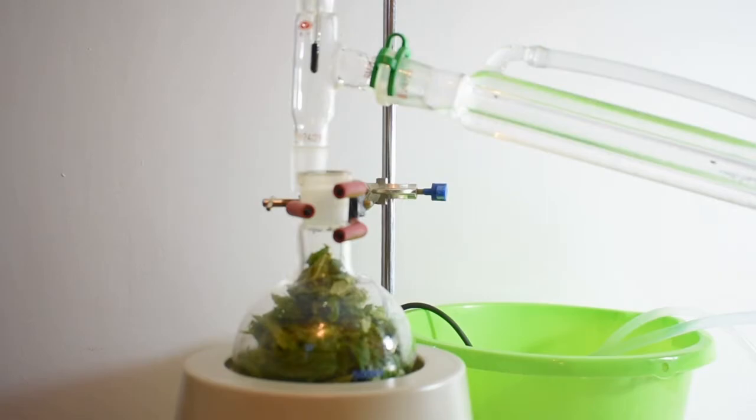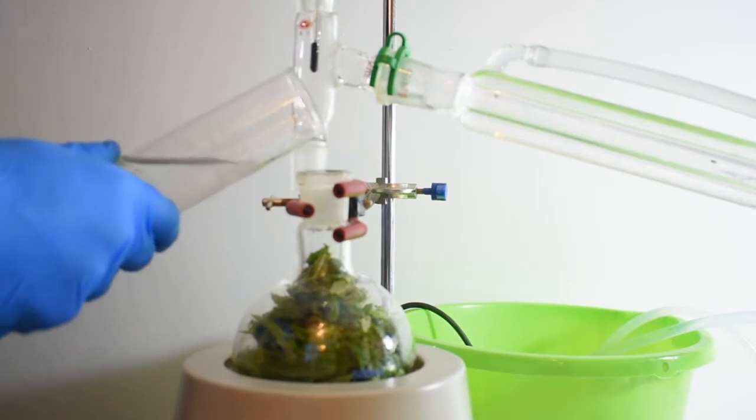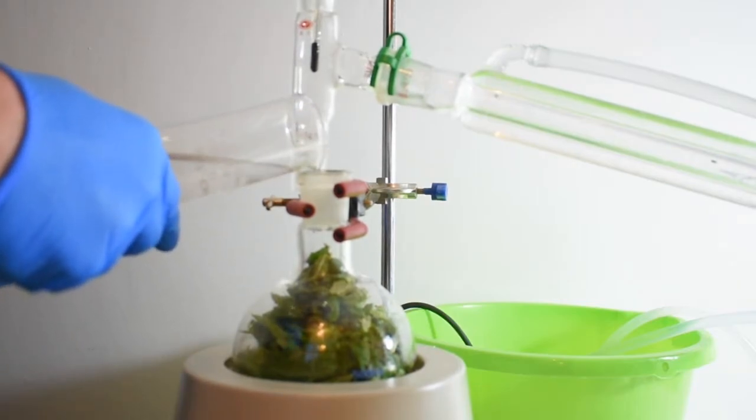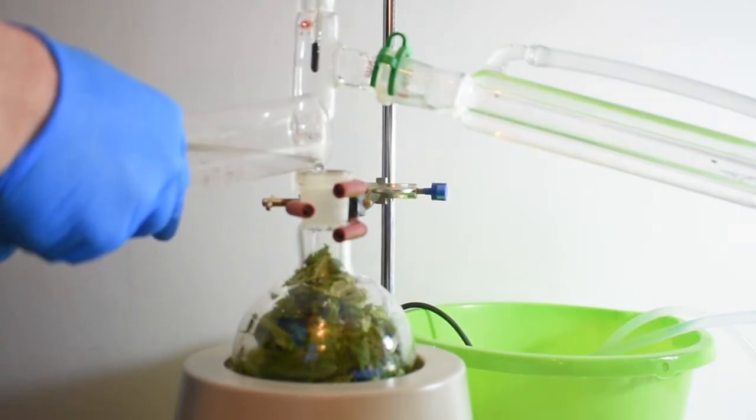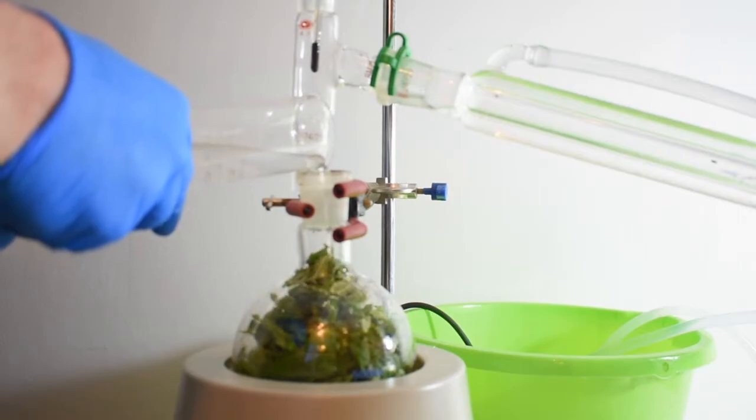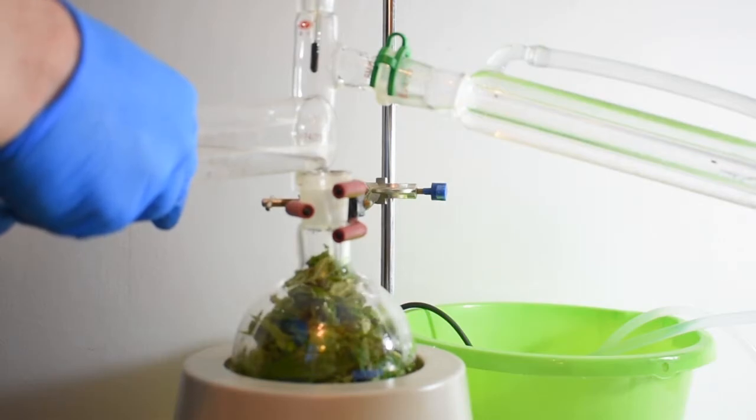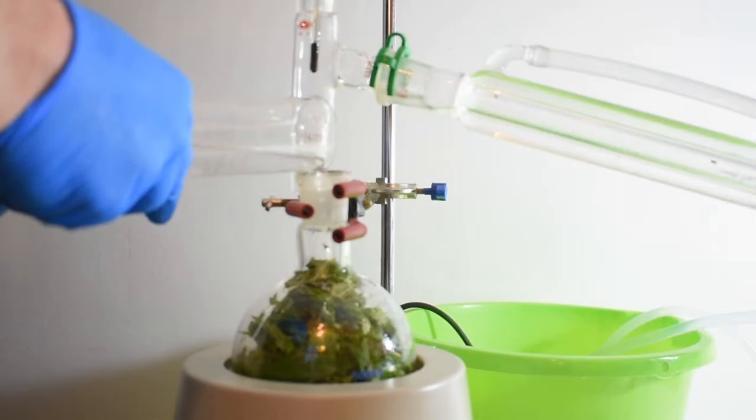After emptying the used mint out of the flask and refilling it with fresh mint, I'm adding another 250 milliliters of water, and then I'm going to turn on the heating again. Essentially, I'm just going to do this another four or five times until we have a lot of distillate with our menthol mint oil in.